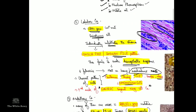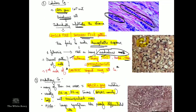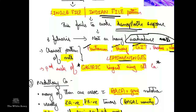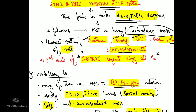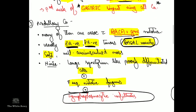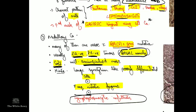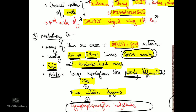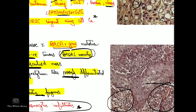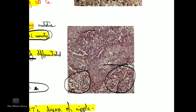Medullary carcinoma is often associated with BRCA1 gene mutation, and in molecular subtypes it is estrogen receptor negative and progesterone receptor negative, belonging to the basal variety. It usually presents as a soft, well-circumscribed mass. Histologically, there are large syncytia of poorly differentiated cells, frequent mitotic figures, and importantly, lymphoplasmacytic infiltrates.